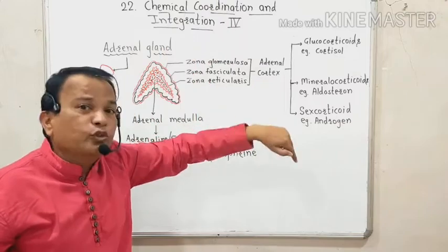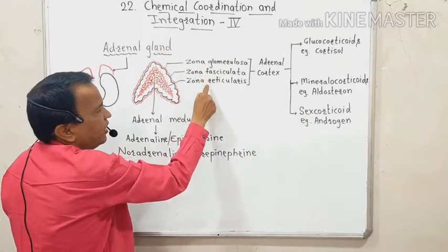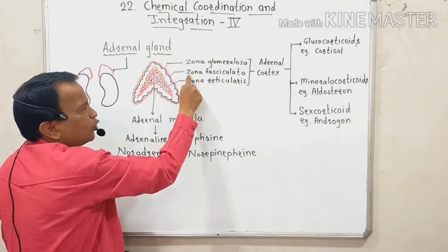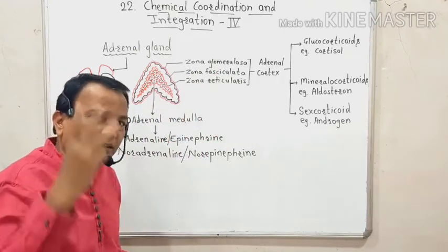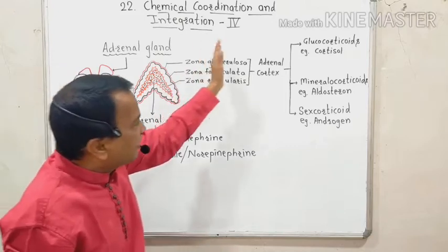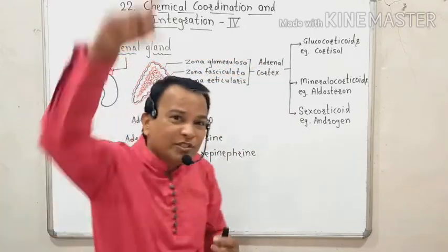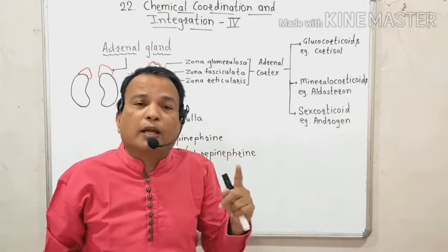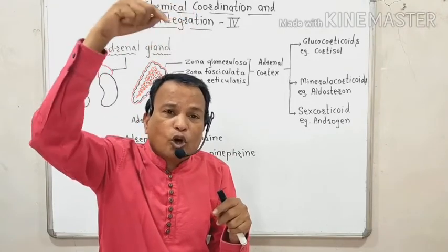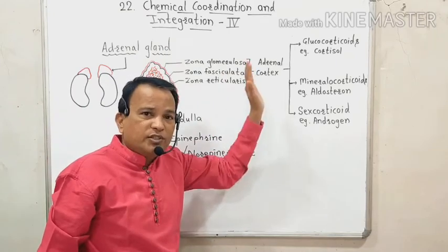To remember the sequence from inside outward, you can use the mnemonic GFR — like Glomerular Filtration Rate — for zona Glomerulosa, zona Fasciculata, and zona Reticularis. These are the three layers in the adrenal cortex from outer to inner side. The adrenal cortex is under the control of the hormone ACTH — Adrenocorticotropic Hormone — secreted from the pituitary gland, which has great control over the adrenal cortex for secreting various hormones.